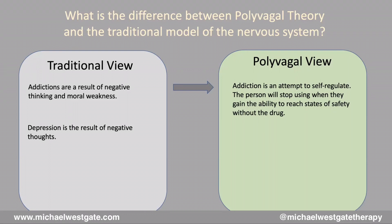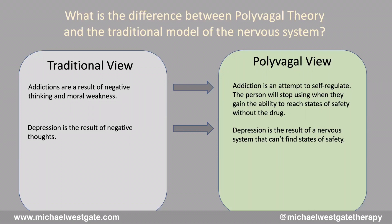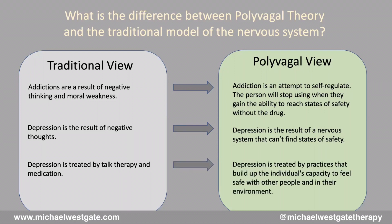The traditional view says depression is the result of negative thoughts. Polyvagal sees it differently: depression is the result of a nervous system that can't find states of safety and is perpetually stuck in states of defense. And while the traditional view treats depression with talk therapy and medication, the polyvagal view treats it through practices that build up the individual's capacity to feel safe — with themselves, with other people, and in their environment.